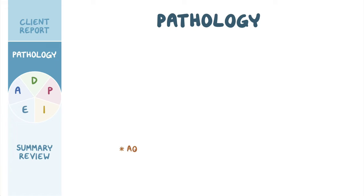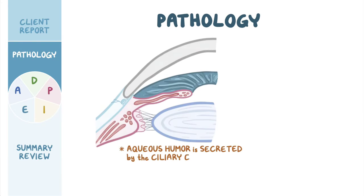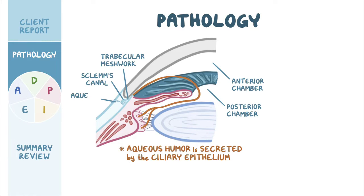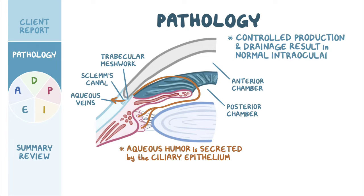The aqueous humor is secreted by the ciliary epithelium into the posterior chamber, and from here it flows through the pupil to the anterior chamber. Next, from the anterior chamber, the fluid drains out of the eye through the trabecular meshwork, into the Schlem's canal, and eventually into the aqueous veins. Controlled production and drainage result in normal intraocular pressure, which typically ranges from 10 to 20 millimeters of mercury.